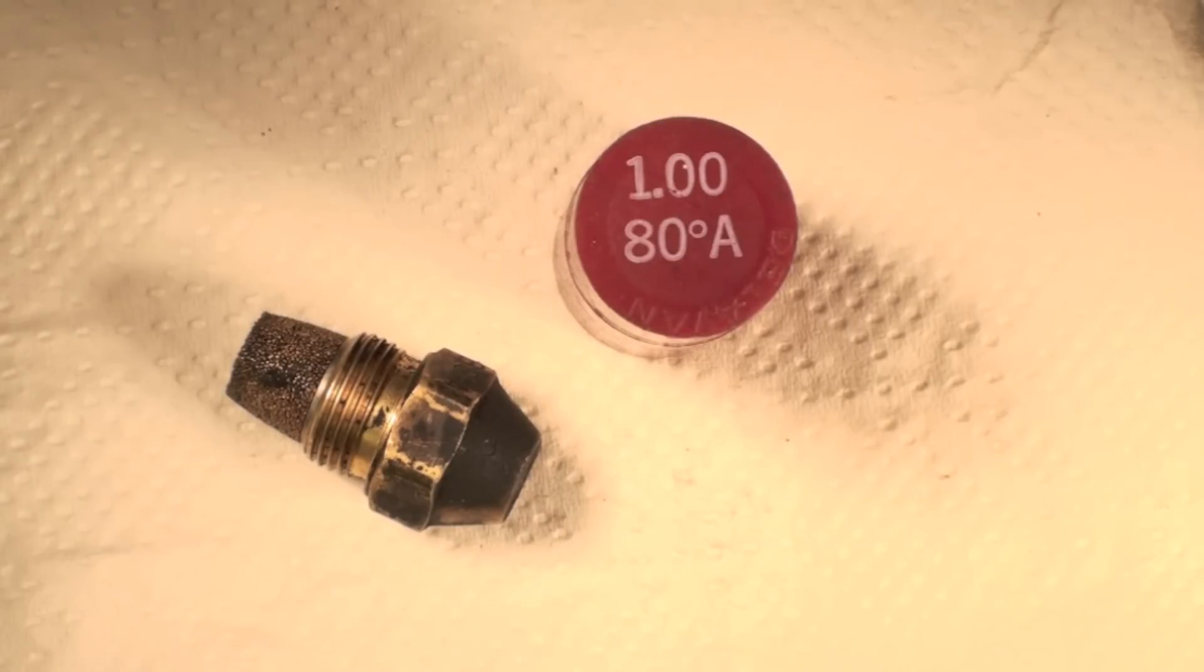Here's a nozzle and there's a nozzle container right next to it. You can see it says 1.00, that's the gallons per hour. 80 degree is the angle of the spray, and A is a semi-solid spray. I'll show you where these numbers are on the nozzle in just a moment.